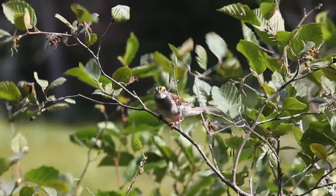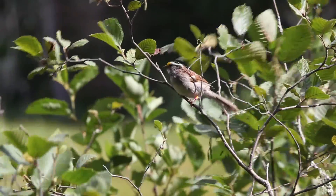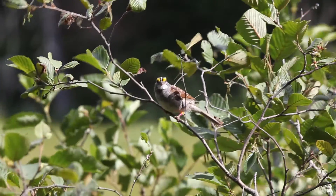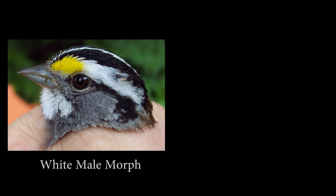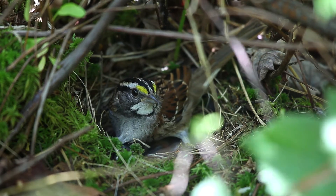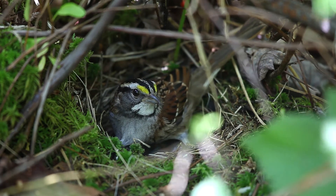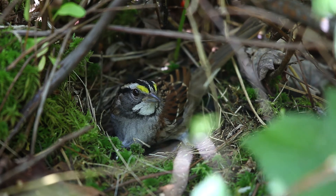We address these questions by investigating the evolutionary history of a supergene in the white-throated sparrow. This species consists of two morphs or forms that differ in feather coloration and components of their social behavior. White morphs have brighter plumage with bright white stripes on their head. They are more aggressive, they sing more, and they are promiscuous.